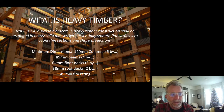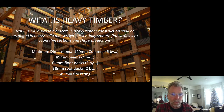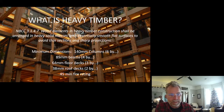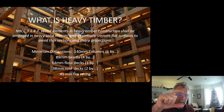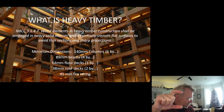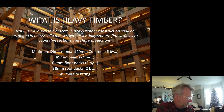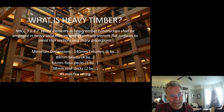Here are our dimensions. Columns have to be six-byes, meaning nominally six inches square — at least 140 millimeters. Nominally six inches translates to 140 millimeters, the exact dimension being five and a half inches. Our beams need a minimum width of 89 millimeters — so four-byes. Our floor decks need to be nominally three inches thick, which translates to exactly two and a half inches, or 64 millimeters.